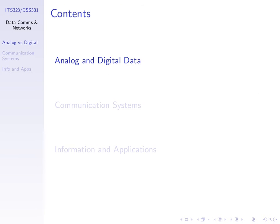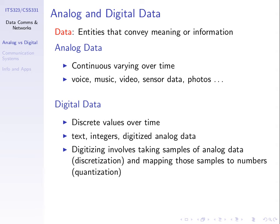First, a little bit about data. You all know the difference between analog and digital, so we'll give a couple of quick examples. Data is the information we want to convey between entities. We can split data into either analog or digital. Analog means something is continuously varying over time; digital means there are discrete values.